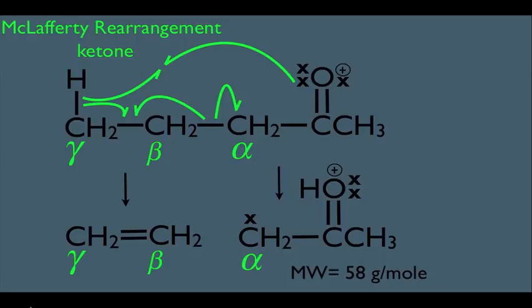For the quick product method for McClafferty rearrangement: if you have a ketone, locate your alpha, beta, and gamma carbons. Then simply sever the bond between the alpha and beta carbon. Represent the alpha carbon as a radical, and represent the oxygen as OH with a positive formal charge. Then place a double bond between the beta and gamma carbon, and know that the neutral fragment is not going to be detected.